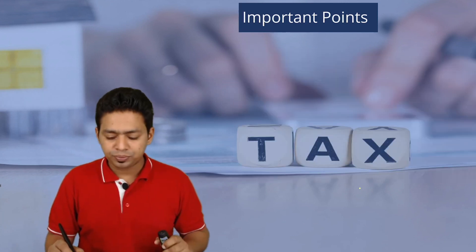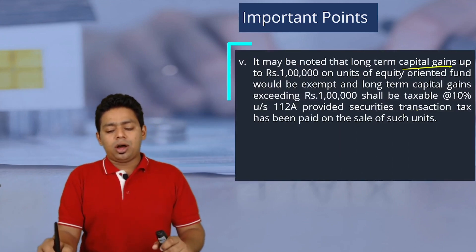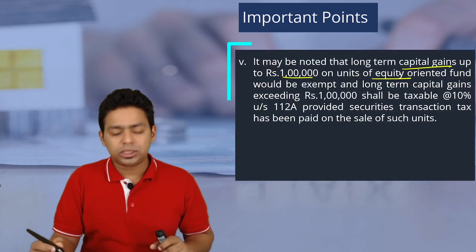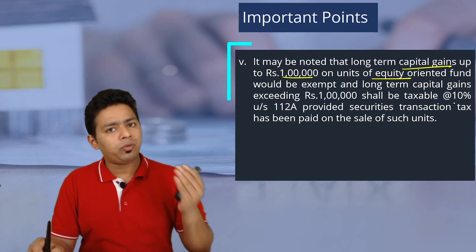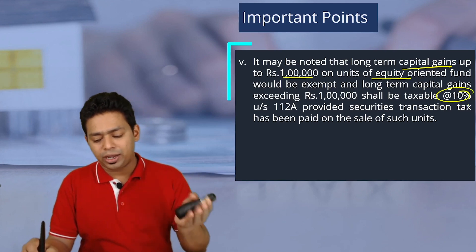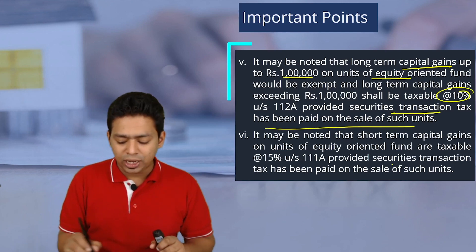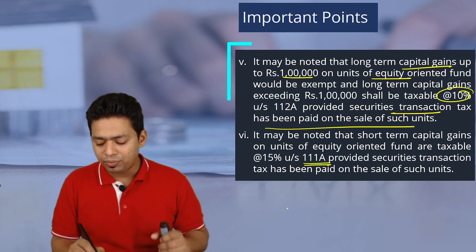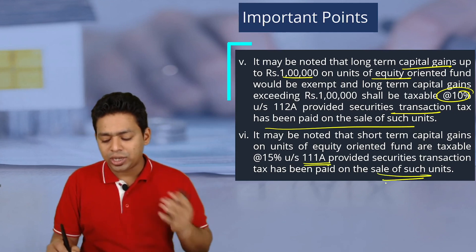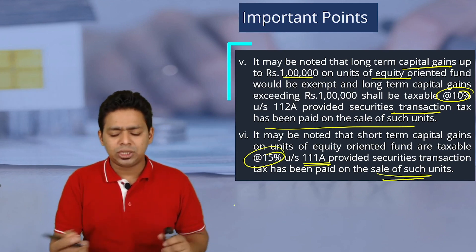It may be noted that long-term capital gain up to rupees 1 lakh on units of an equity-oriented fund would not be taxable. Only above 1 lakh will the capital gain be taxable at the rate of 10 percent, provided Securities Transaction Tax has been paid. If short-term capital gain is earned and Securities Transaction Tax has been paid, then short-term capital gain will be taxable at the rate of 15 percent.